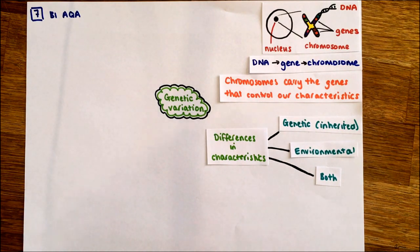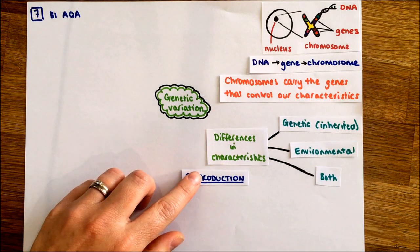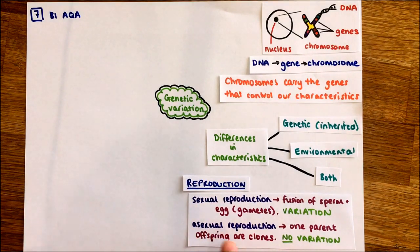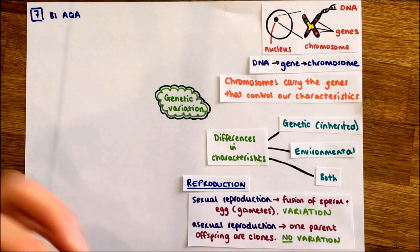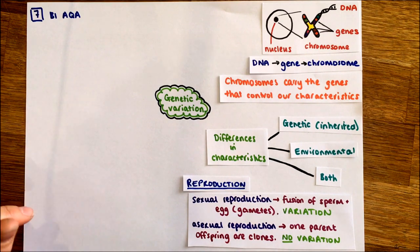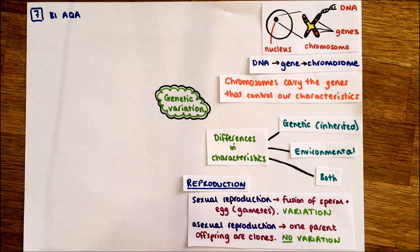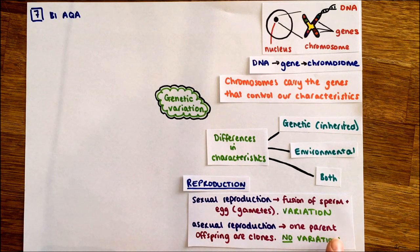The next part is sexual and asexual reproduction. Sexual reproduction is when we get the fusion of gametes - the sperm and the egg cells - from two parents. You get variation because you get a mixture of different DNA from the two parents. We get variation within a species, so no two people look exactly the same, unless they are identical twins.